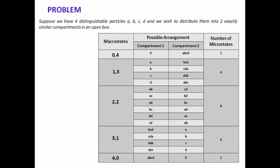The next possibility will be macrostate (1, 3). That means in one compartment there may be particle a, b, c, or d, and in the other compartment the remaining three particles are present. The number of microstates for the (1, 3) macrostate will be 4. The next possibility is (2, 2) — that means two particles can be present in compartment 1 and the other two in compartment 2. The total number of microstates for the (2, 2) macrostate will be 6.